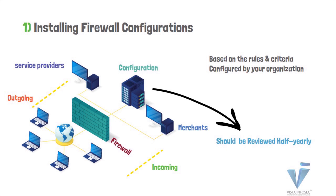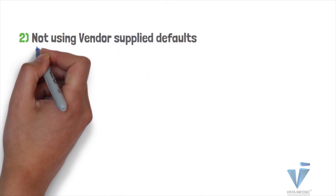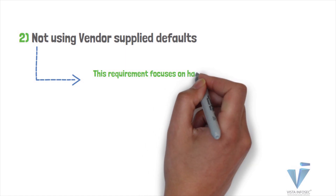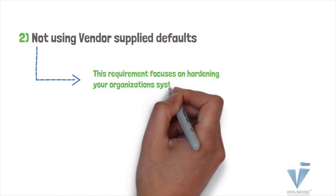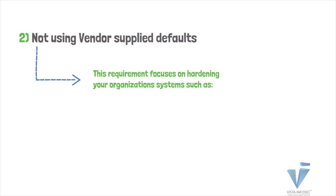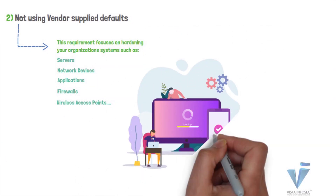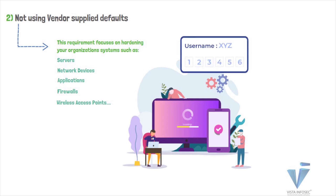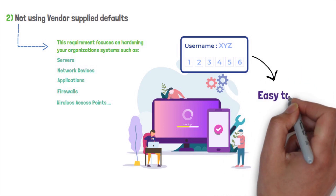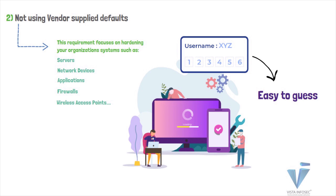PCI DSS Requirement 2 is to not use vendor-supplied defaults for system passwords and other security parameters. This requirement focuses on hardening your organization's systems such as servers, network devices, applications, firewalls, and wireless access points. Most operating systems and devices come with factory default settings such as usernames and passwords or other insecure configuration parameters. These default usernames and passwords are simple to guess and even available on the internet, so such default passwords and other security parameters may pose a huge threat to the environment.